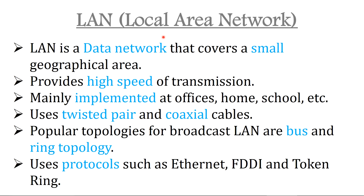The first type of network is the Local Area Network. LAN is a data network that covers a small geographical area. These are privately owned networks and cover a single building or campus of up to a few kilometers in size. LAN provides high speed transmission — conventional LANs run at speeds of 10 Mbps to 100 Mbps — with low delay and very few errors. Newer LANs operate up to 10 Gbps. LANs are mainly used to connect personal computers and workstations in homes, offices, and factories to share resources and exchange information.